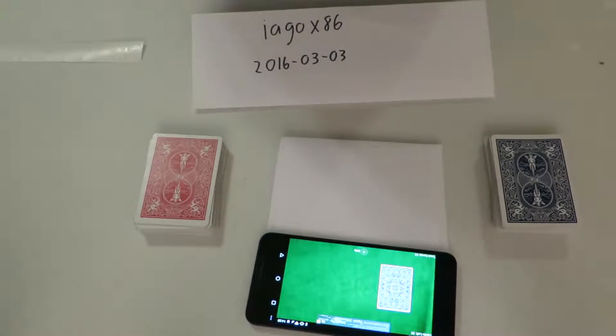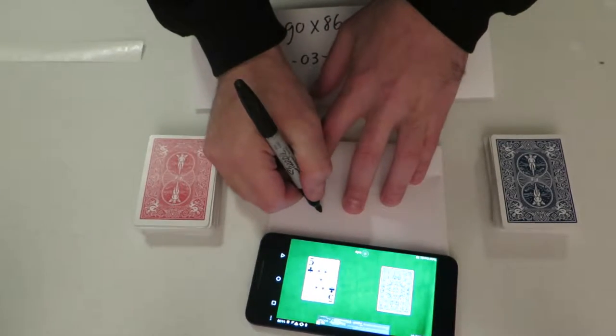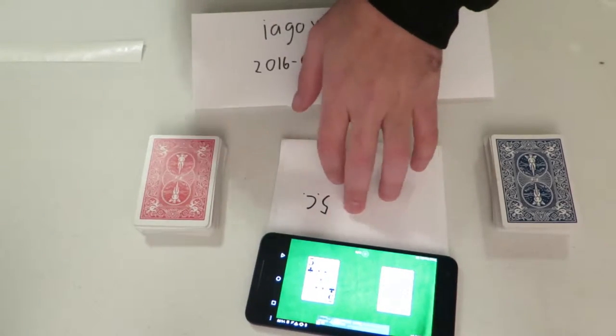So, ask the first volunteer, name any card from a standard deck of cards. What's your favorite card? And they're going to say, the five of clubs. So I'll keep track over here, five of clubs.